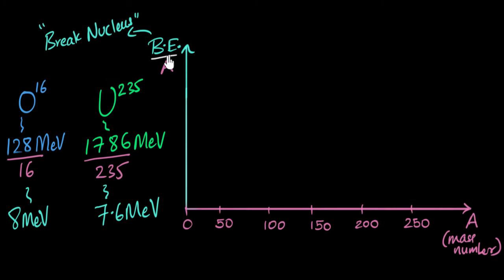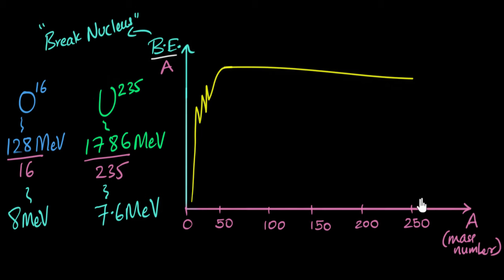We're looking at binding energy per nucleon for all the different elements and comparing them. Here is the graph. For lighter nuclei, as the mass number increases — as you add more protons and neutrons — the binding energy per nucleon, essentially their stability, starts increasing and becomes more and more stable. Then it reaches a maximum value, and then slowly starts decreasing, but pretty much stays constant.